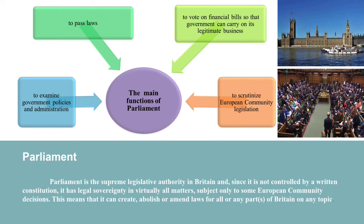Parliament is the supreme legislative authority in Britain, and since it is not controlled by a written constitution, it has legal sovereignty in virtually all matters, subject only to some European Community decisions. This means that it can create, abolish or amend laws for all or any parts of Britain on any topic. The main functions of Parliament today are to pass laws, to vote on financial bills so that government can carry on its legitimate business, to examine government policies and administration, and to scrutinize European Community legislation.